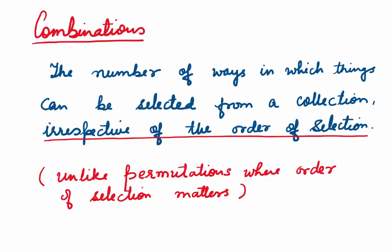How are combinations different from permutations? In permutations, the order of selection matters, whereas in combinations it does not. Permutations and combinations are used in finding probabilities and in statistics.